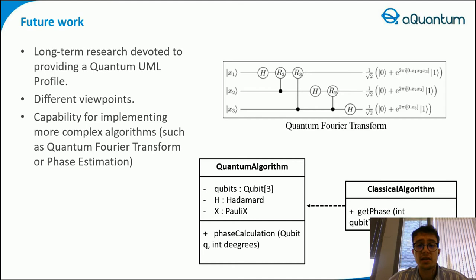This presentation proposes the UML extension as part of more extensive long-term research devoted to providing a quantum UML profile that will cover other viewpoints and aspects of the analysis and design of hybrid information systems — for example, use case, class, sequence, component, and deployment diagrams will be extended with the quantum UML profile, and our future research line will comprise precisely this. As future work, the implementation of more complex algorithms, like the quantum Fourier transformation or phase estimation, will be made in order to check the applicability of the UML activity diagram for the approach proposed. Thank you very much.